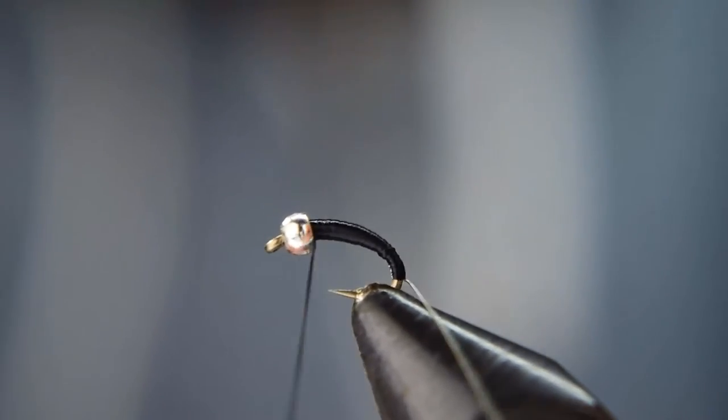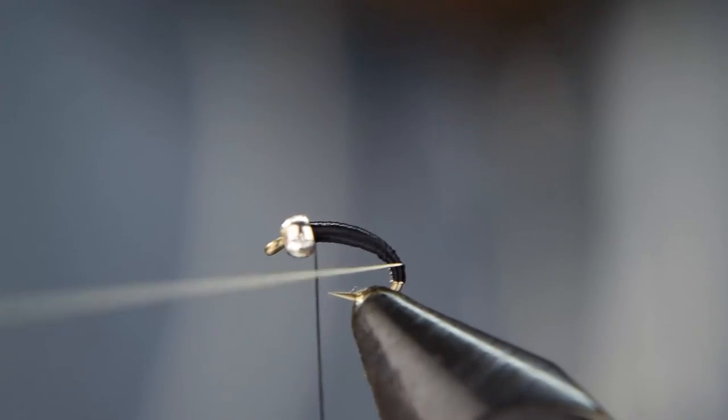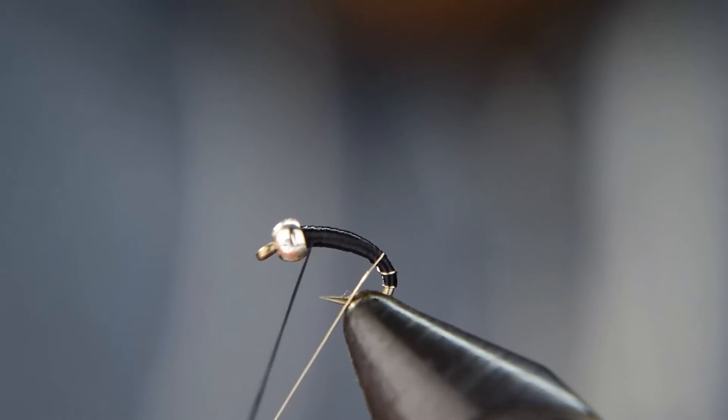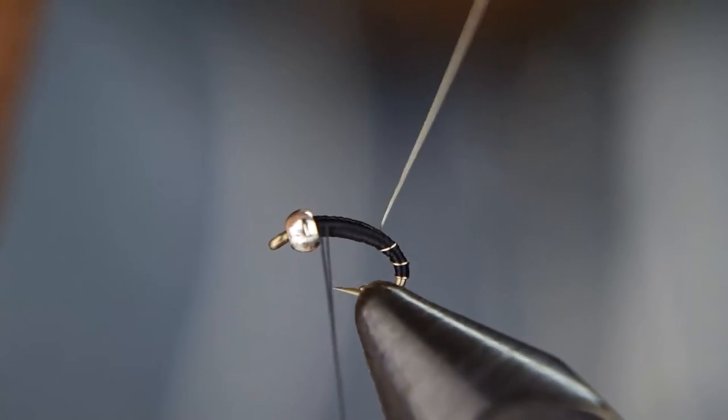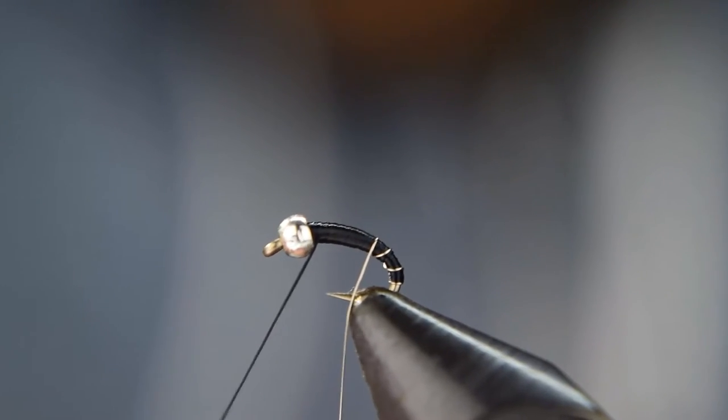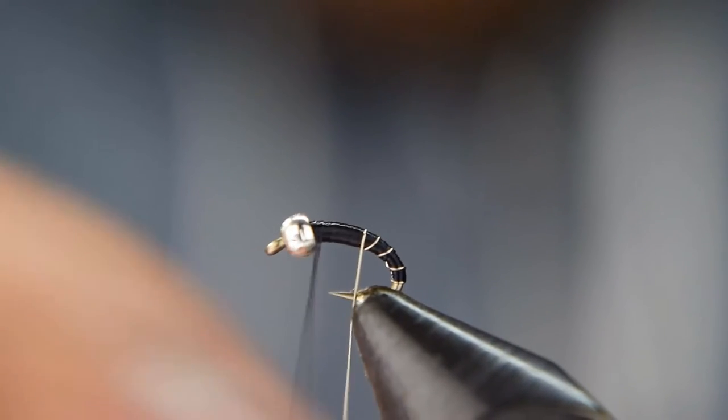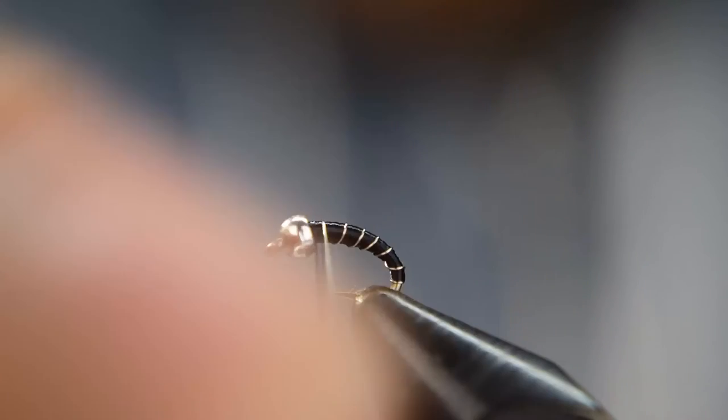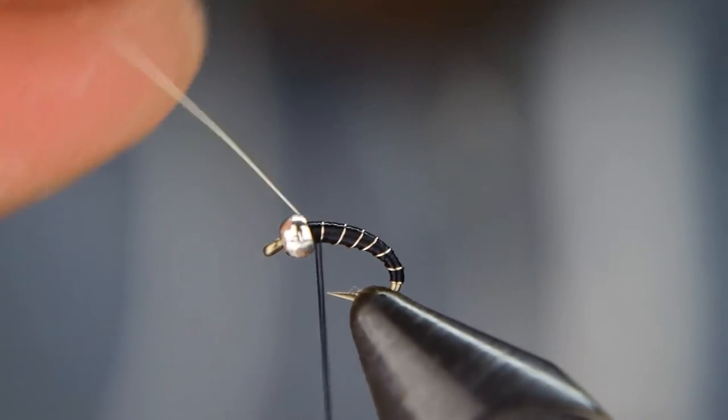We're going to leave our thread right there and we're going to take our wire. You're going to spiral the wire right onto here, onto the body, and you're going to want to space that out as even as you can, so the gaps between each turn are about the same.